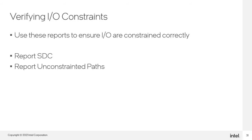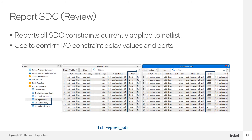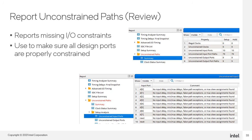Once you have your IO constraints entered, how do you verify them? Use the Report SDC report in Timing Analyzer. This command reports on all constraints in your SDC file, making it a good check to confirm that set_input_delay and set_output_delay were entered properly. Also run the Report Unconstrained Paths to verify that all paths in your design are constrained — this report will also point out inputs and outputs that have not been constrained. You want all unconstrained paths down to zero.